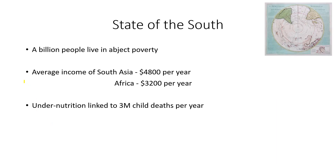The state of the South, or the poor countries of the world: we have about a billion people in the world that live in abject poverty. The average income of South Asia is about $4,800 per year; in Africa it's only about $3,200 per year. Undernutrition, even though it might not actually cause death, is linked to 3 million child deaths each year.